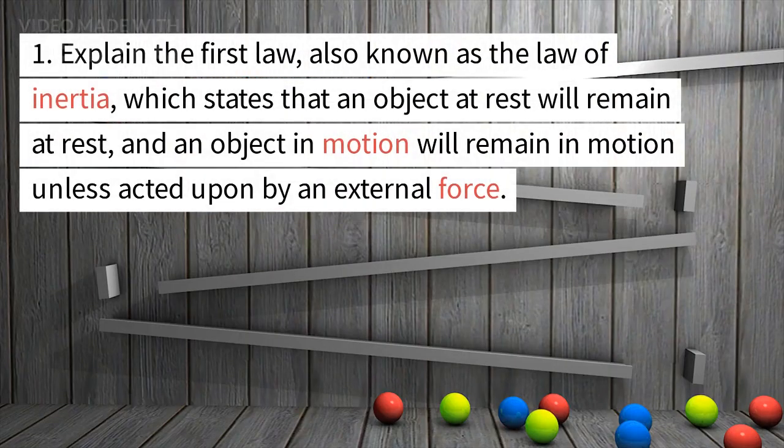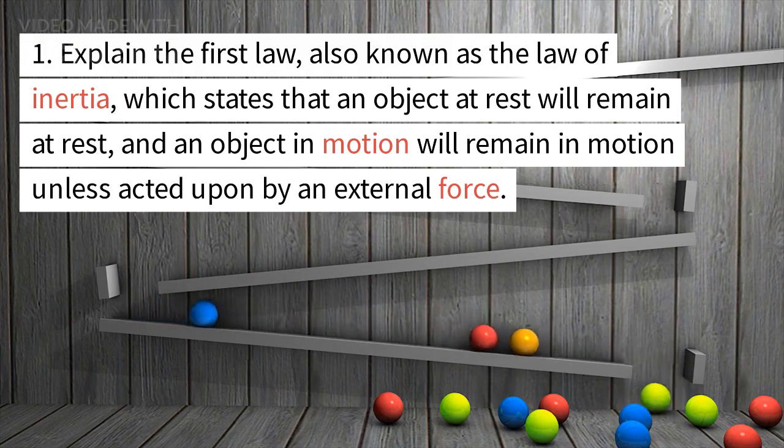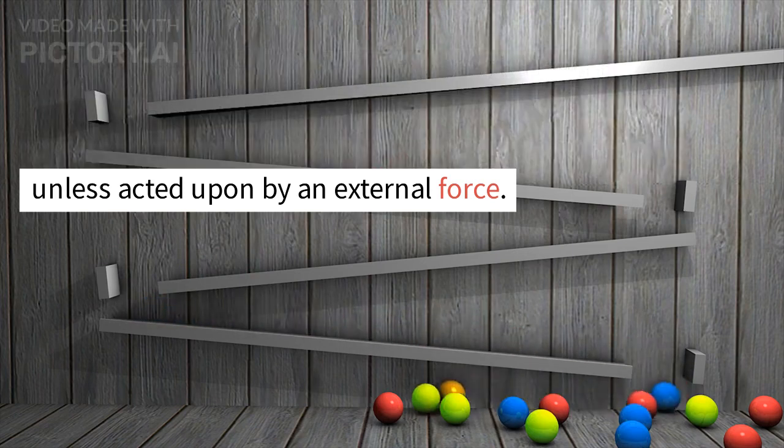Explain the first law, also known as the law of inertia, which states that an object at rest will remain at rest, and an object in motion will remain in motion unless acted upon by an external force.